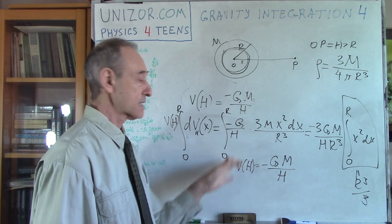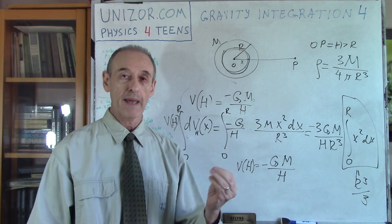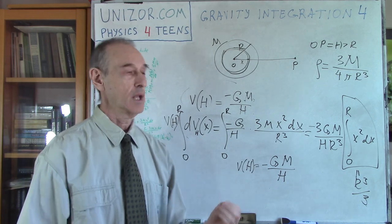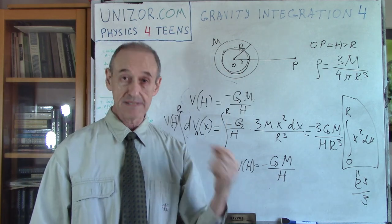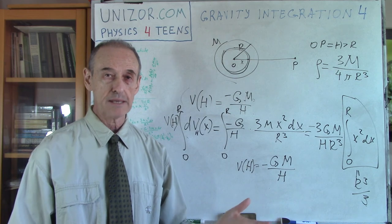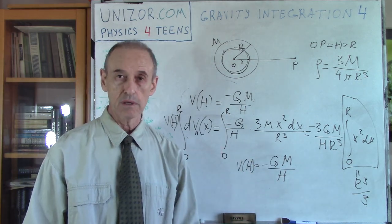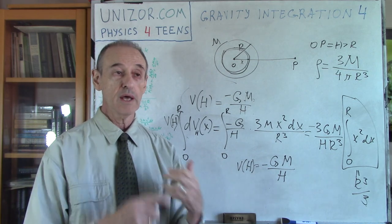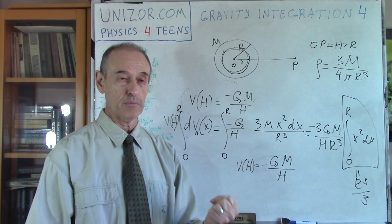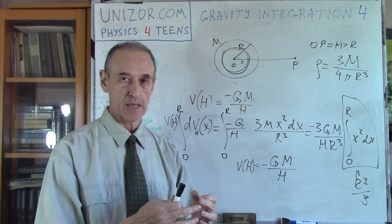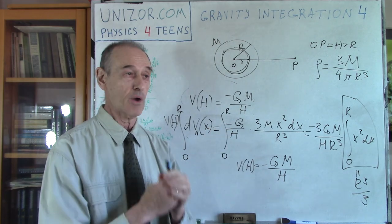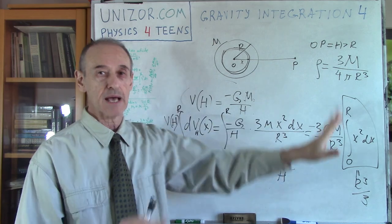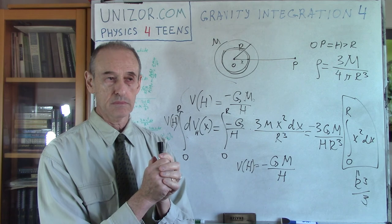Surprise! We have exactly the same formula as for the empty shell. This is a universal formula — it's exactly the same as if the whole mass is concentrated at the center as a point mass. So there is no difference between a point mass, a shell, or a solid uniform sphere of the same mass — they all act exactly the same. The gravitational field at this outside point is identical for all three cases, which is quite remarkable.